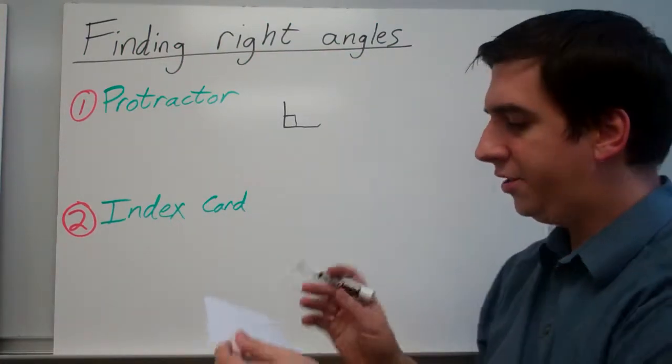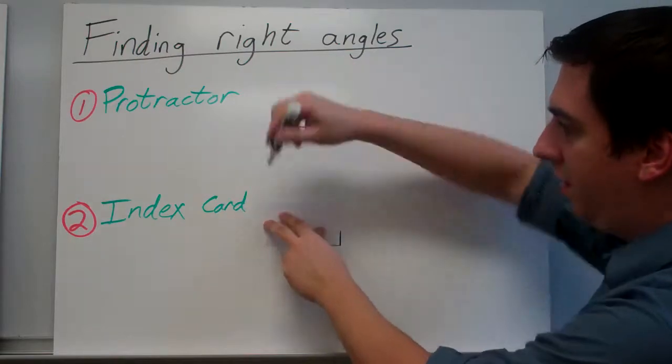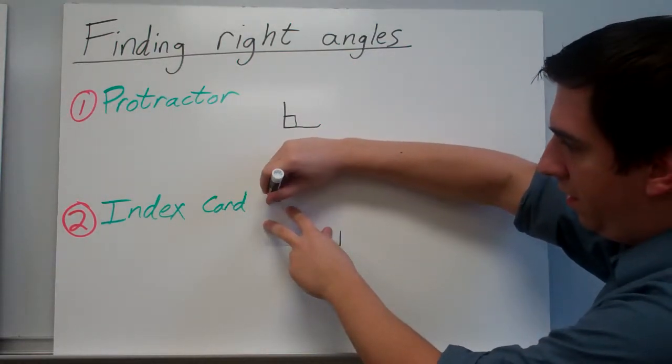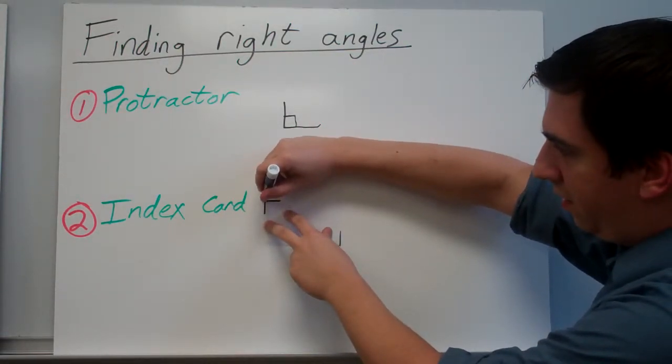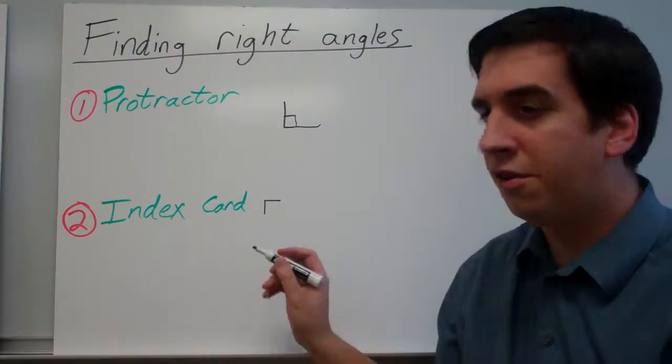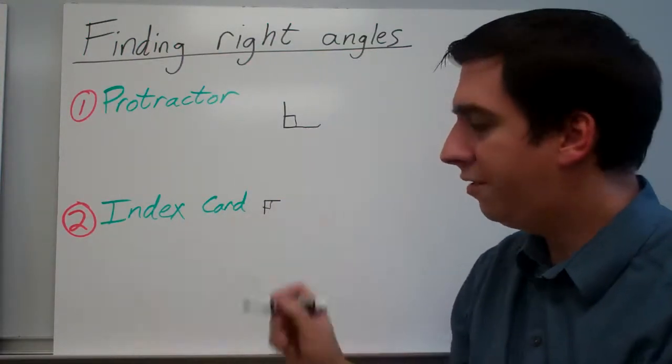We can also use an index card, which might be a little bit easier to use here. We just literally trace a corner and we have a 90 degree angle.